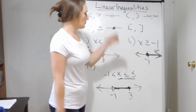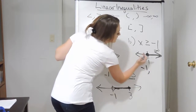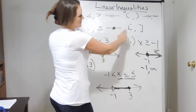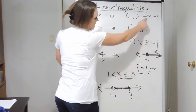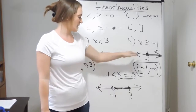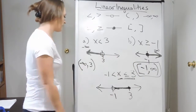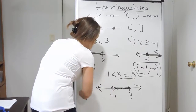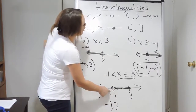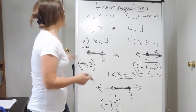For example B, looking from left to right, solutions don't start until negative one — that's where they start — and they go all the way to infinity. On the left-hand side, that's a solid dot, so that's a bracket. On the right-hand side, I have infinity, so that's a parenthesis. You can have different types on each side: left side has a bracket, right side has a parenthesis: [-1, ∞). For example C, solutions go from negative one to three. Negative one has an open dot — parentheses. Three has a solid dot — bracket. So the interval notation is (-1, 3].